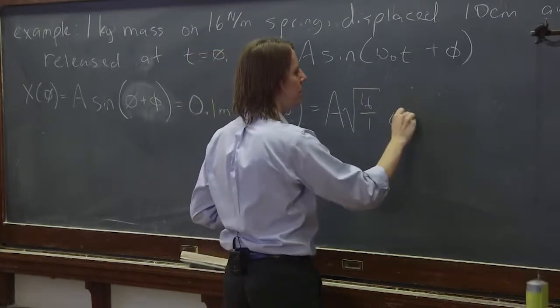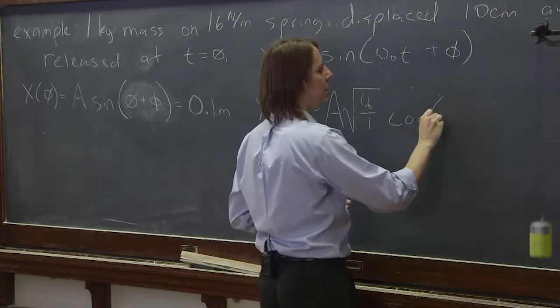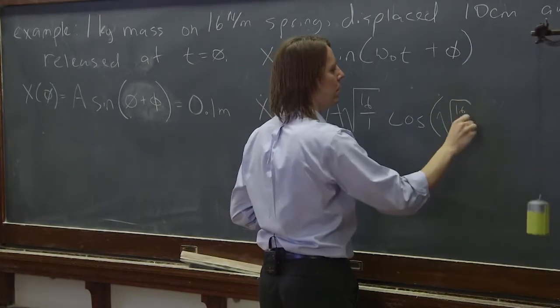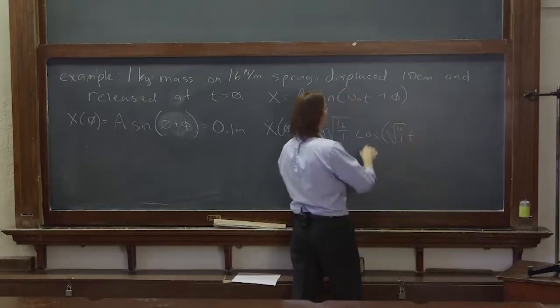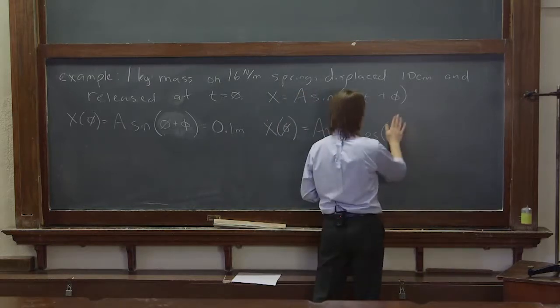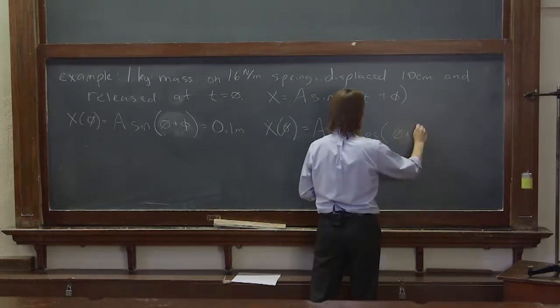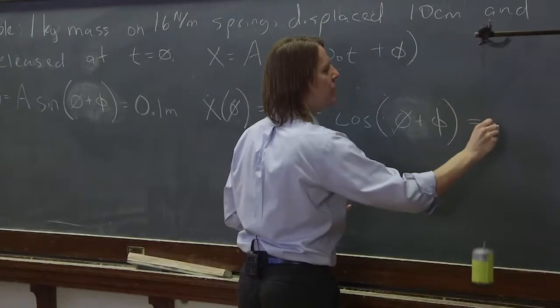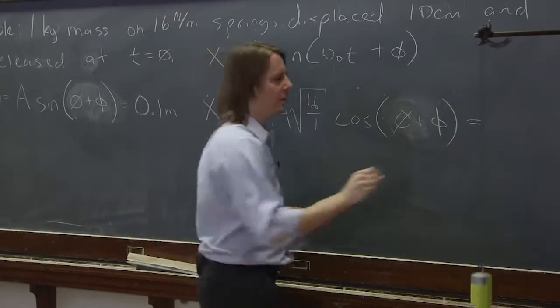Sine becomes cosine, t, but again, this is at time equals zero. So this part goes away. You have zero here plus phi equals what? The initial velocity was zero.